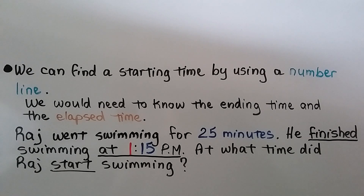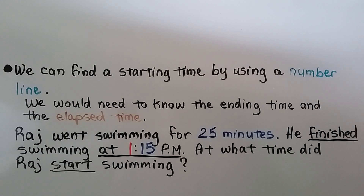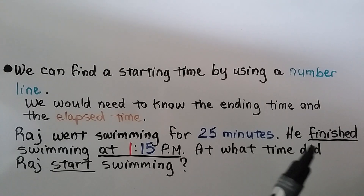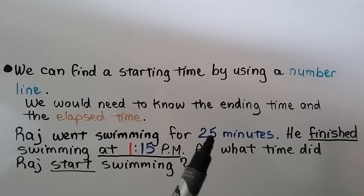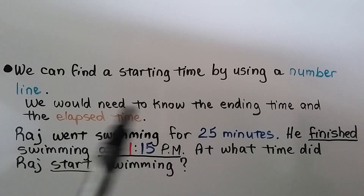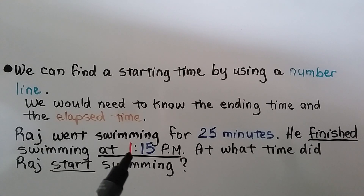We can find a starting time by using a number line — we need to know the ending time and the elapsed time. Raj went swimming for 25 minutes and finished swimming at 1:15 p.m. At what time did he start swimming? We know when he finished and how long it took, so we need to count back to find the starting time. He finished at 1:15 p.m. and it took him 25 minutes.